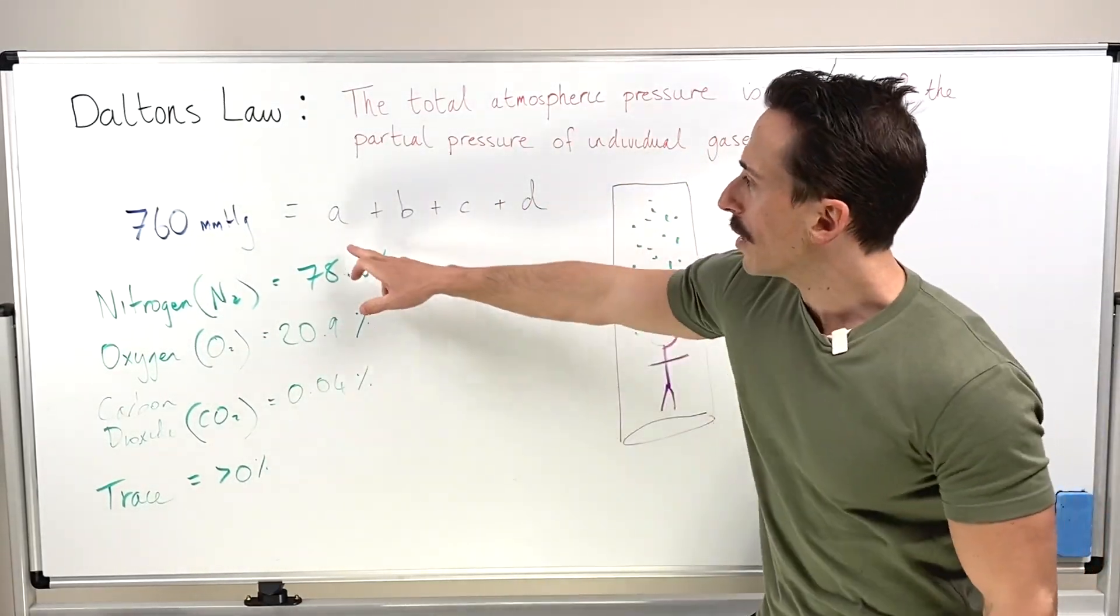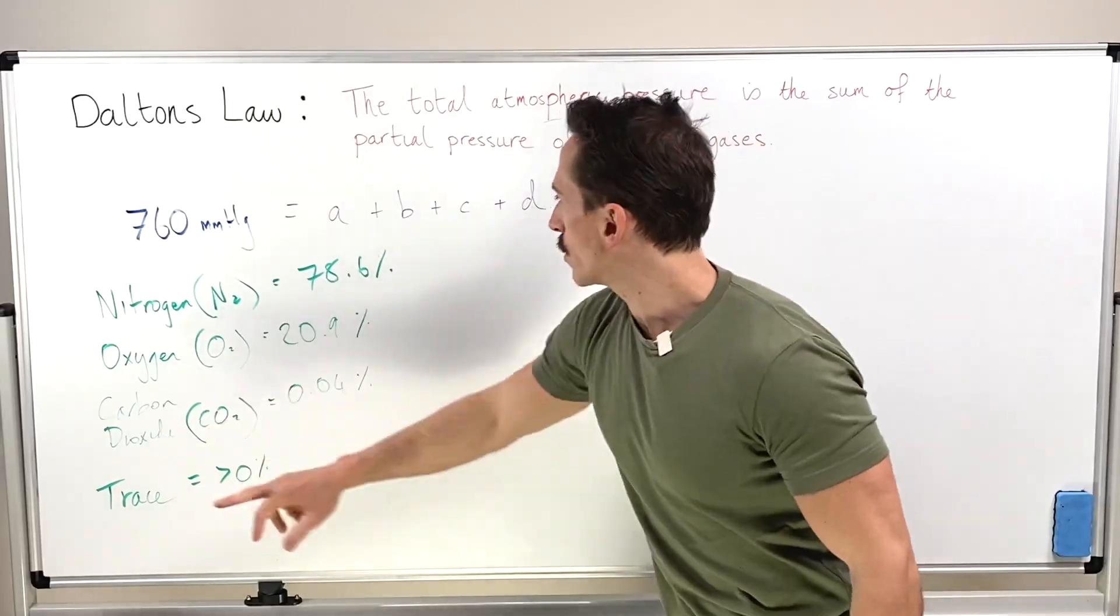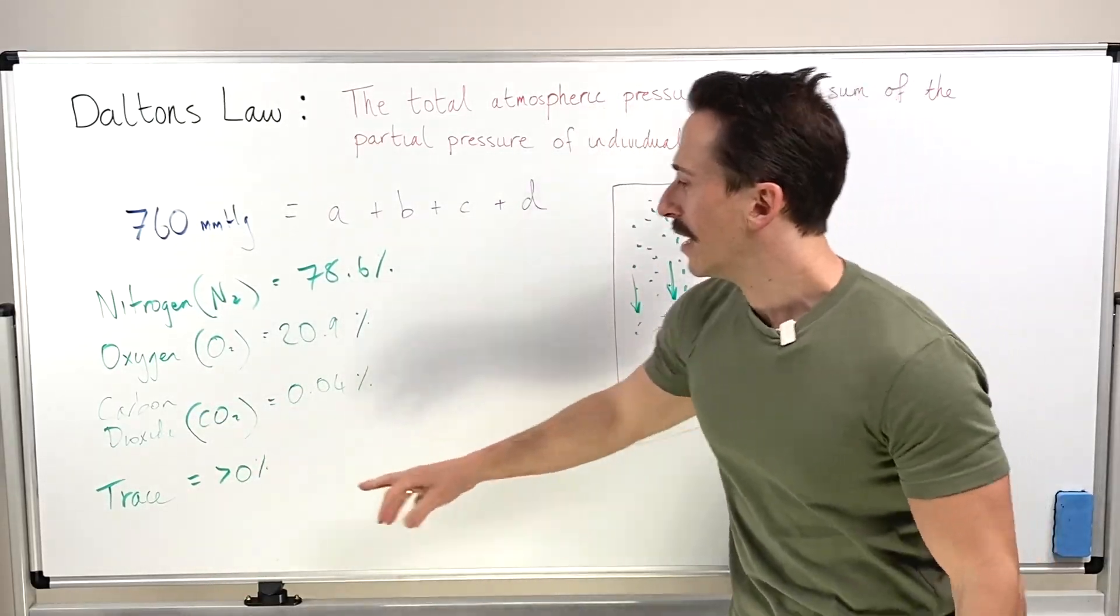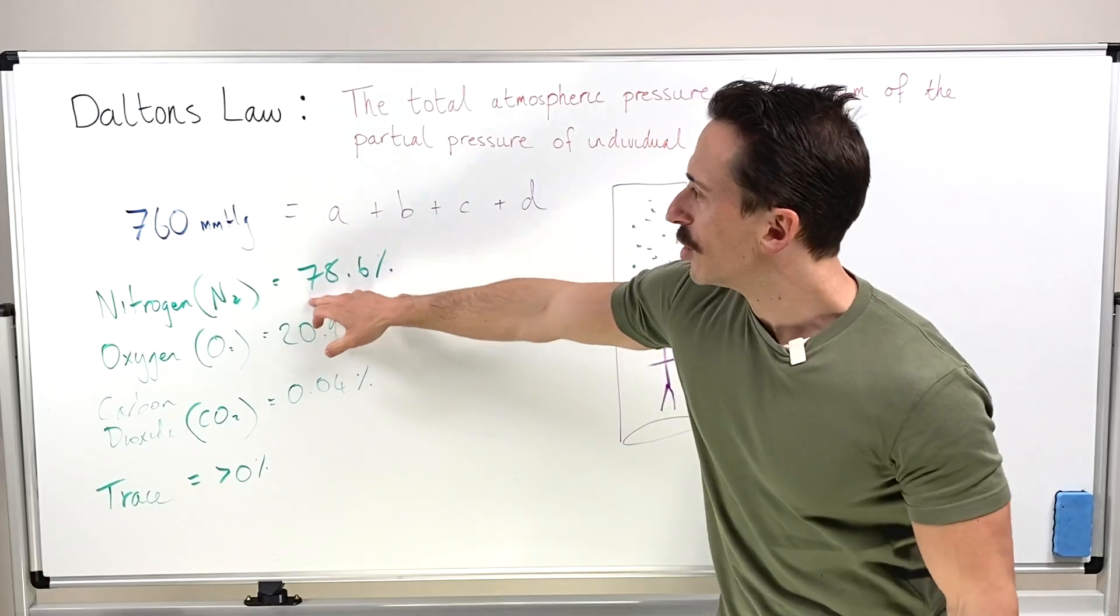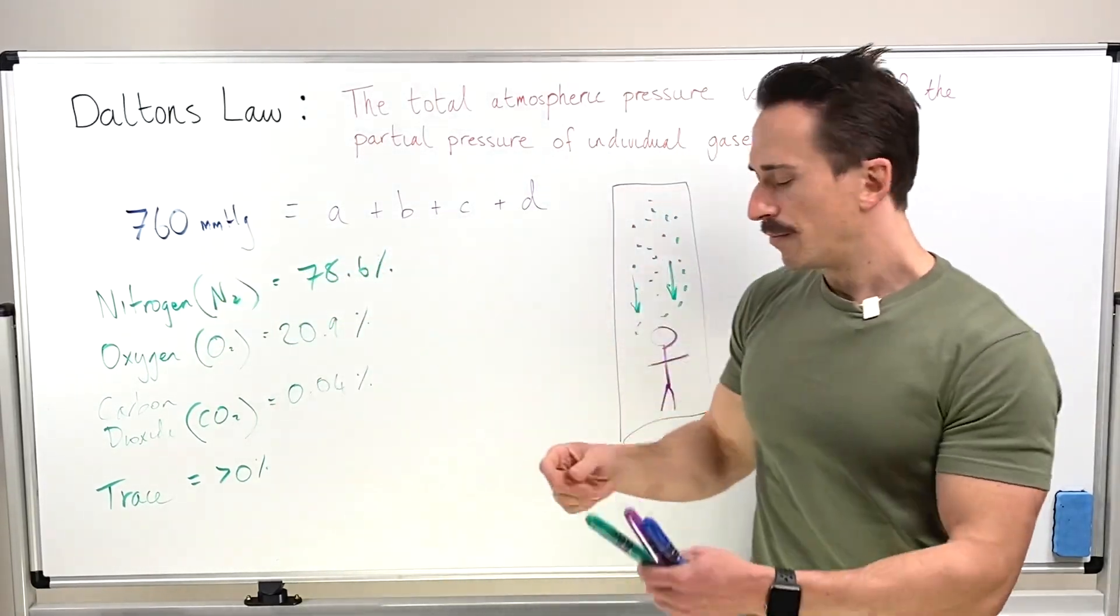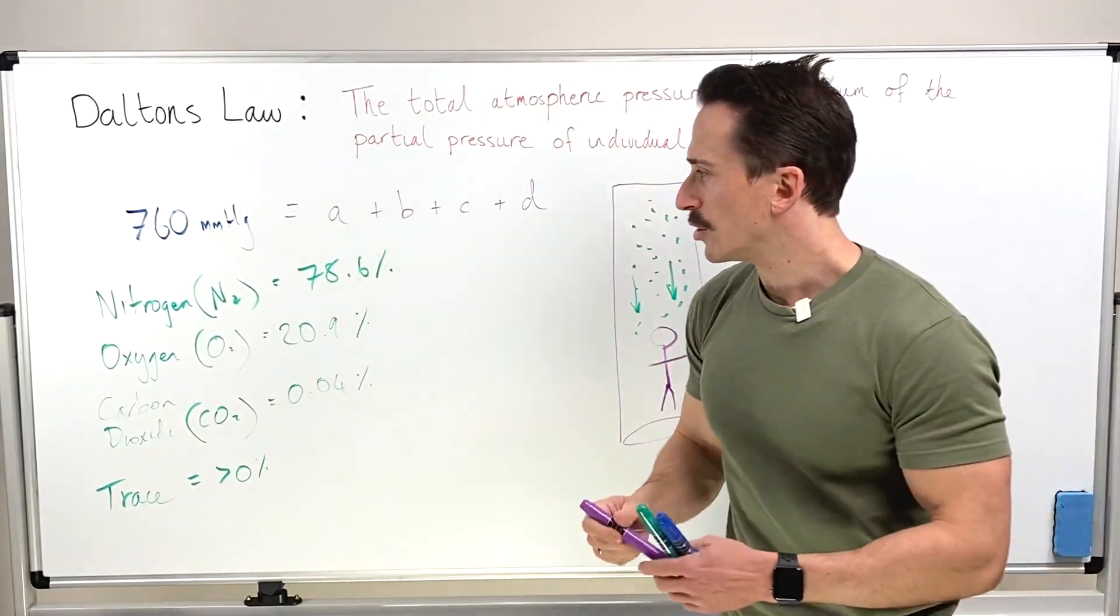All right, so we know that A is nitrogen, B is oxygen, C is carbon dioxide, D is the trace gases, we just have to add them together. Now that's a percentage, and that's an actual unit of measurement, so we need to do some slight changes.